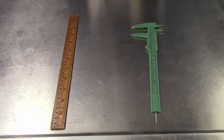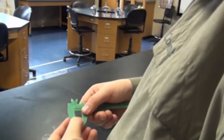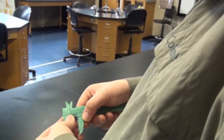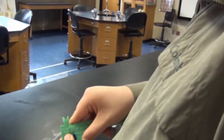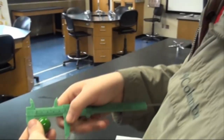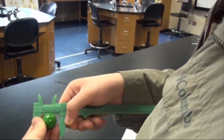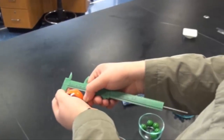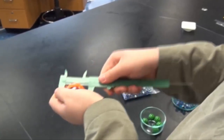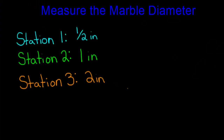Learners should then measure the diameter of the three marble sizes using a ruler or a caliper. As expected, the marbles at our first station are about a half inch in diameter. The marbles at the second station are about an inch in diameter, and the marbles at the third station are about two inches in diameter. We then record our marble diameter here.